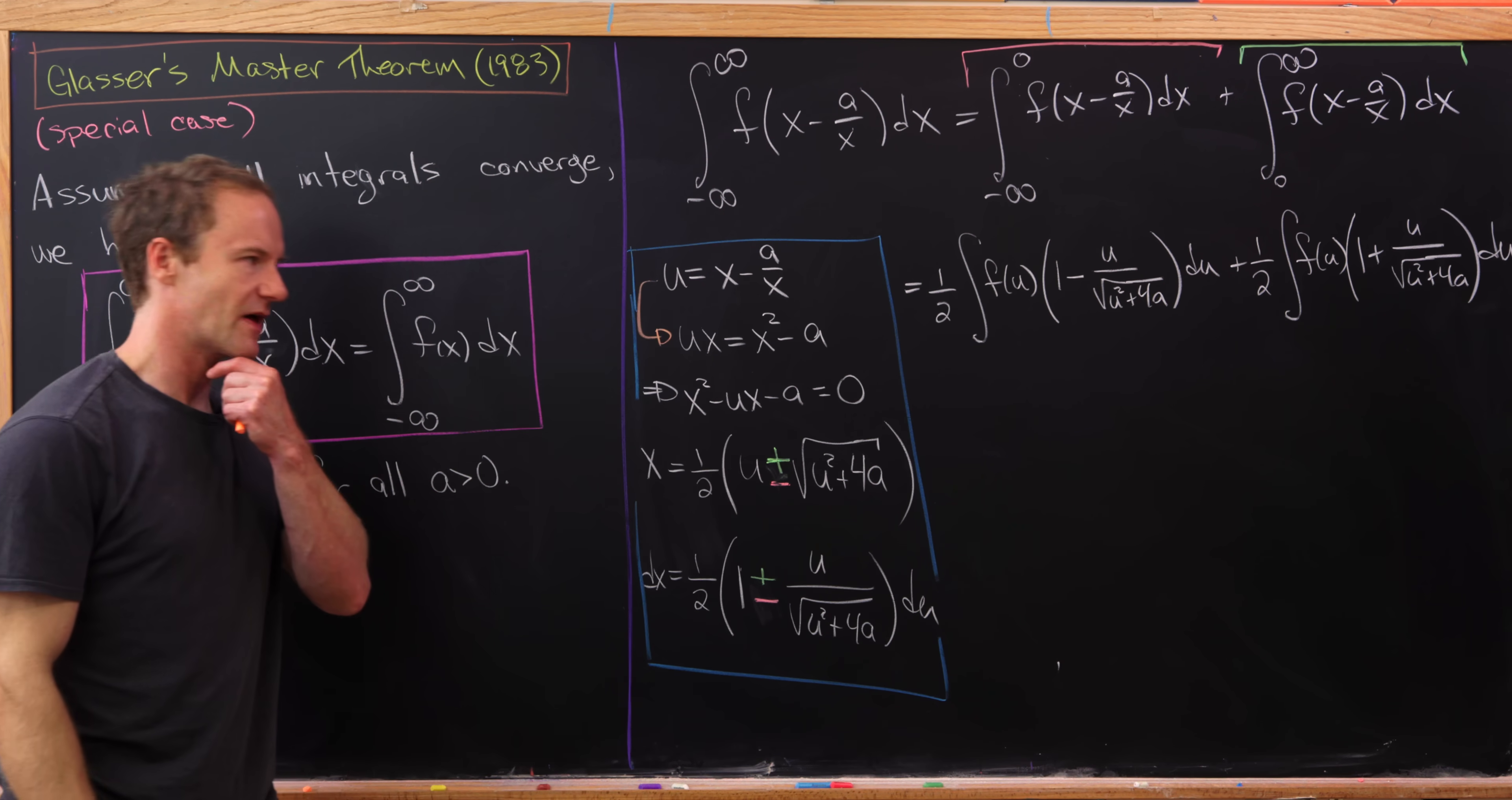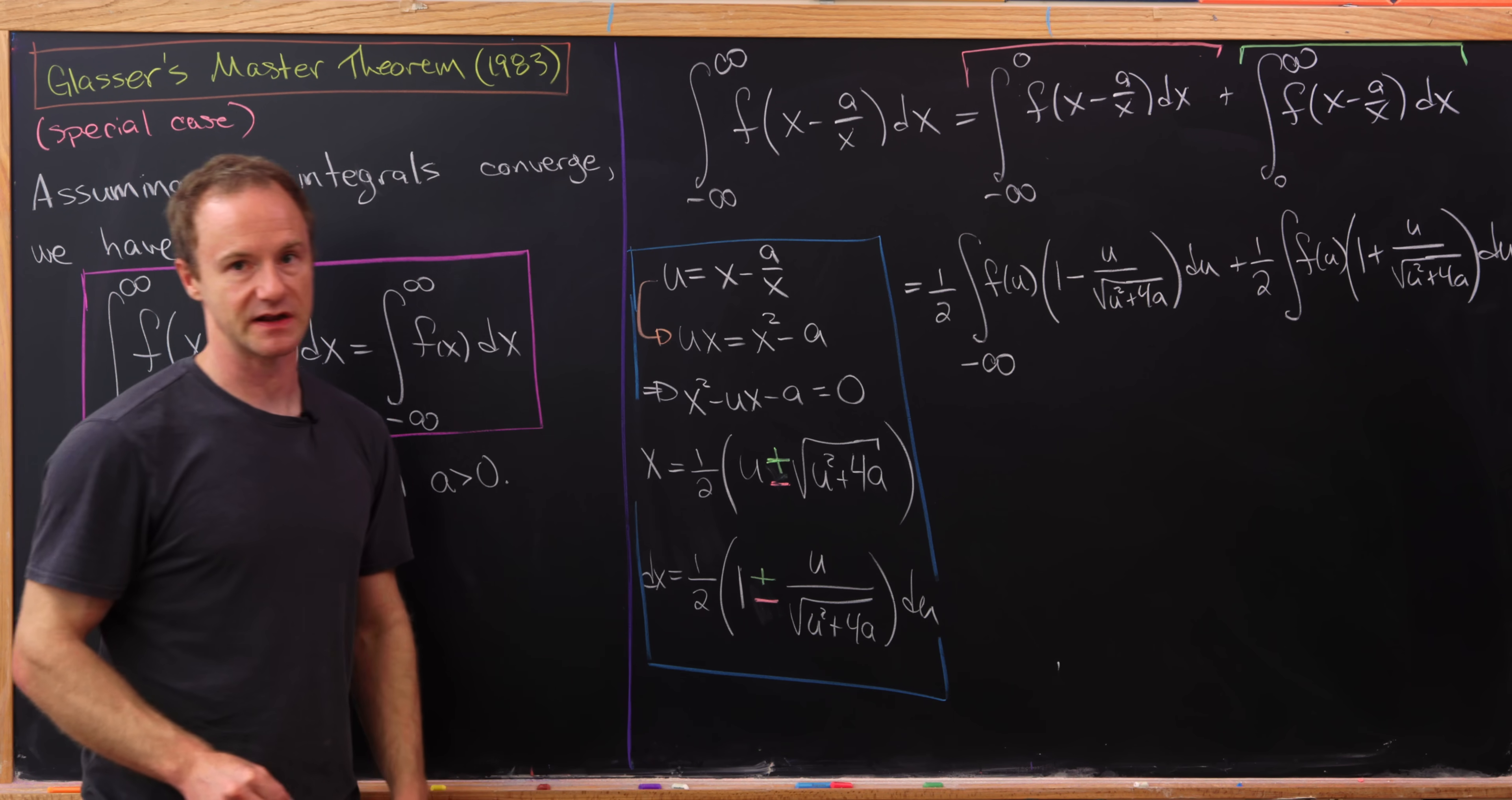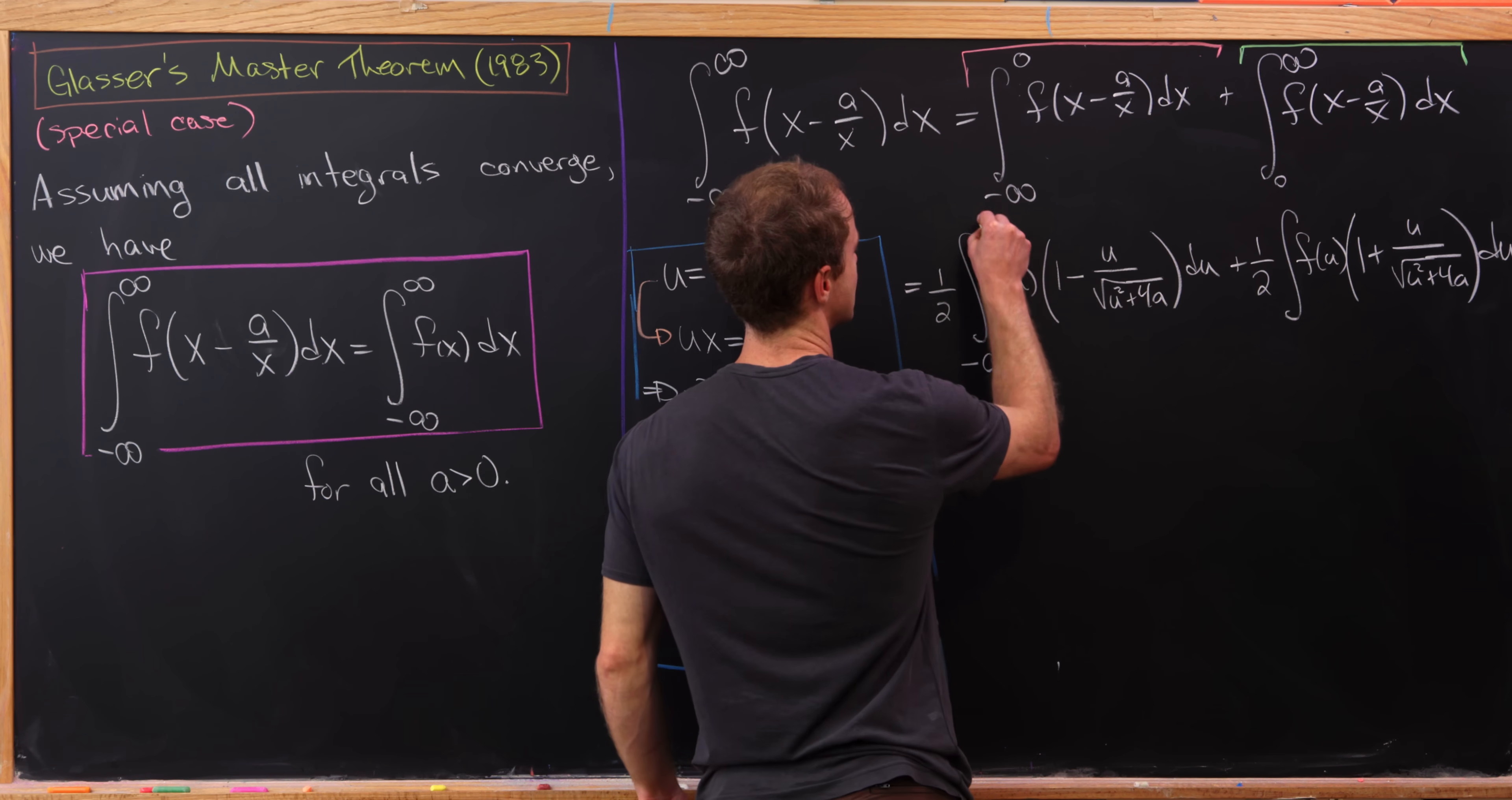But now we need to talk about the bounds of integration. Notice as x approaches negative infinity, let's see what's happening to u. Notice this term is approaching 0, but this x term is approaching negative infinity, so u is also approaching negative infinity. So that means our lower bound remains negative infinity. But now as x approaches 0 from below, this x term is going to approach 0. But then this term is going to approach positive infinity because we have the minus sign here and then a minus sign built into the fact that we're approaching 0 from below. And of course, we use the fact that a is positive here. So that means our upper bound of integration is infinity.